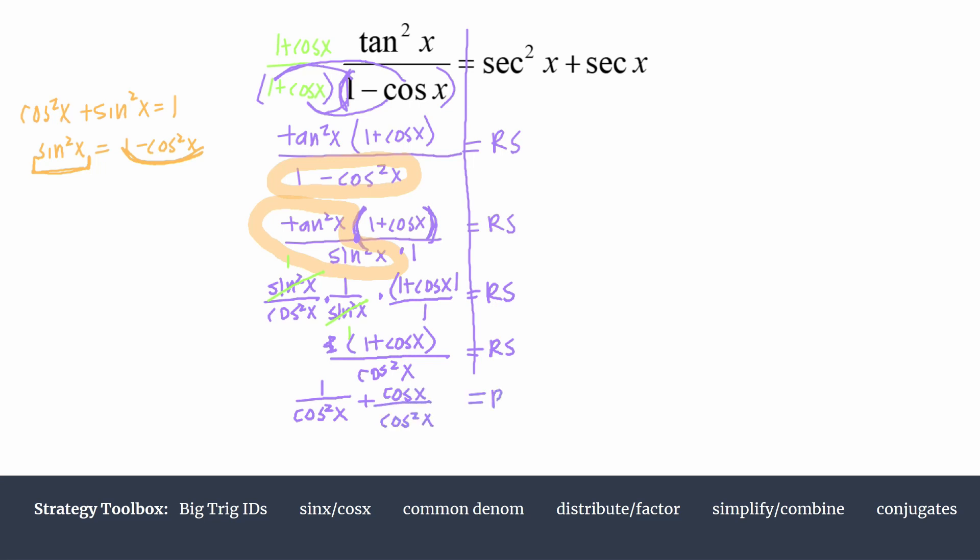Hopefully you can see we are really close. This first term we can use a reciprocal identity and we'll rewrite 1 over cosine squared as secant squared. In the second term we'll cancel out a common factor.